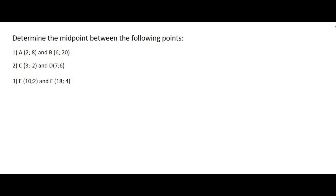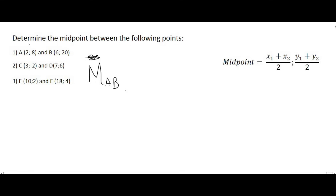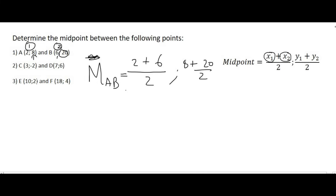Let's work out the midpoint for each of these. For number one, we look at the midpoint between A and B using the midpoint formula. We write capital M of A, B — note capital M, unlike gradient which uses small m. Taking point 1 as A and point 2 as B: x values give 2 plus 6 over 2, and y values give 8 plus 20 over 2. So 2 plus 6 is 8, divided by 2 is 4; and 8 plus 20 is 28, divided by 2 is 14. The midpoint of A, B is (4, 14).